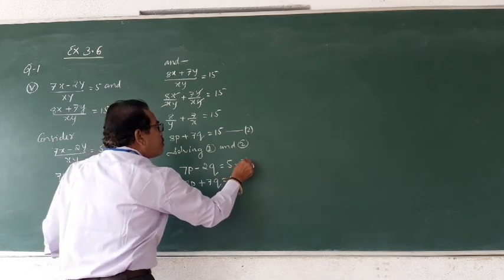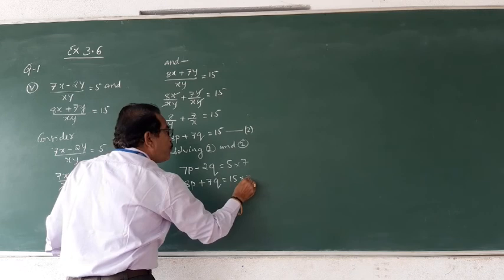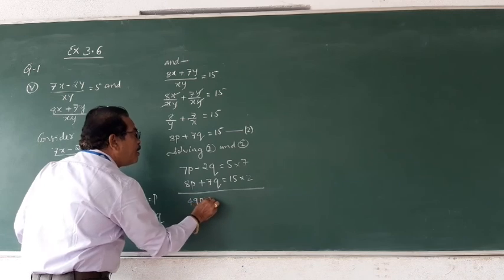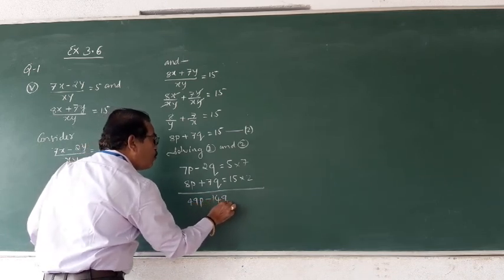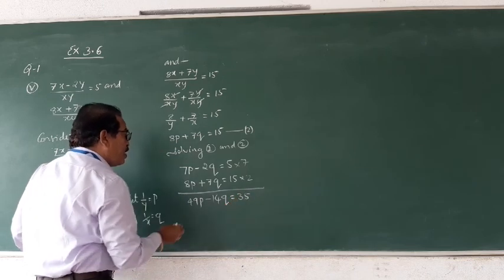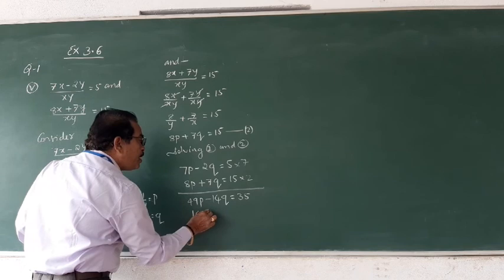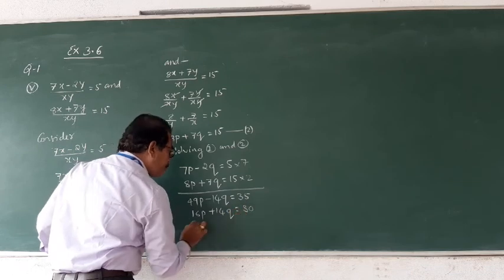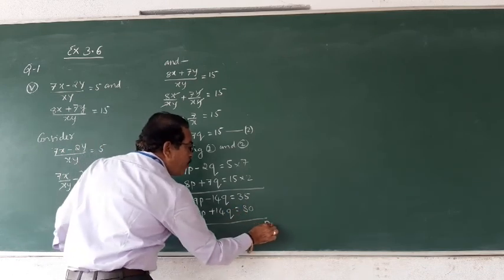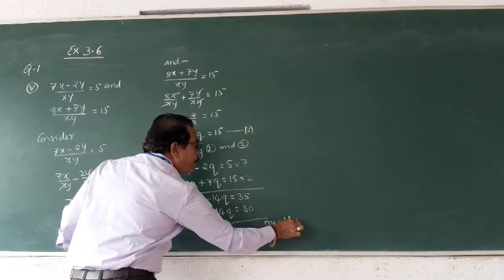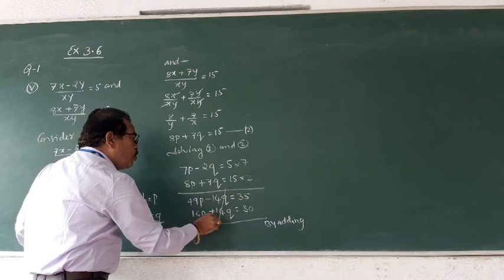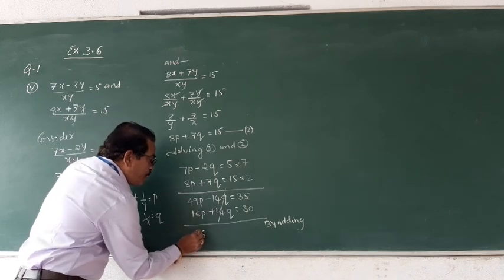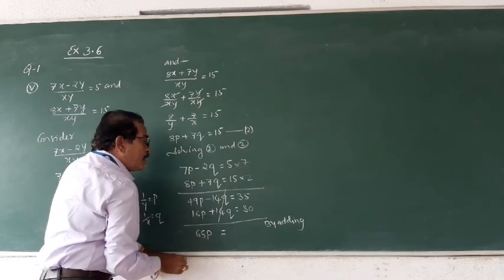Now let us multiply by the coefficient of q. Multiply equation 1 by 7: 49p minus 14q equals to 35. Multiply equation 2 by 2: 16p plus 14q equals to 30. By adding, the 14q terms cancel, so 65p equals to 65.